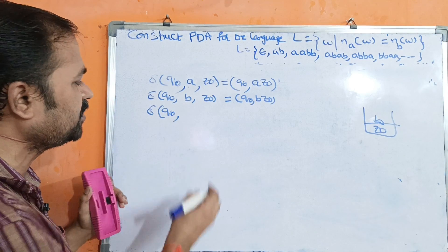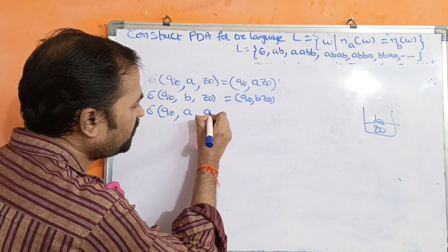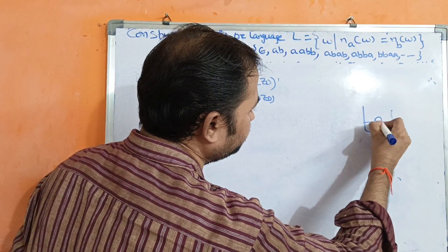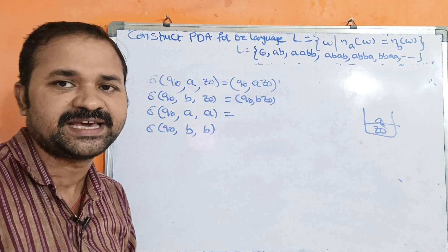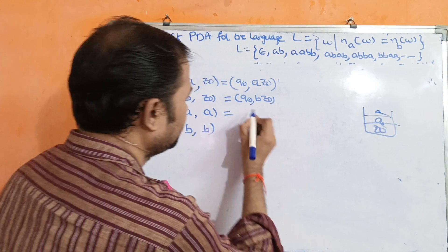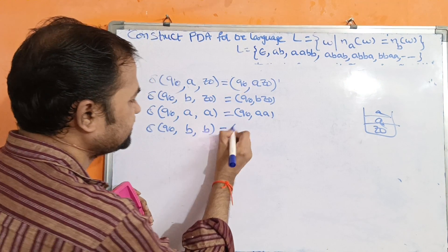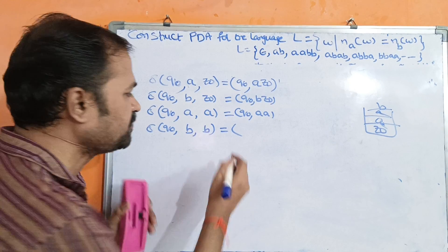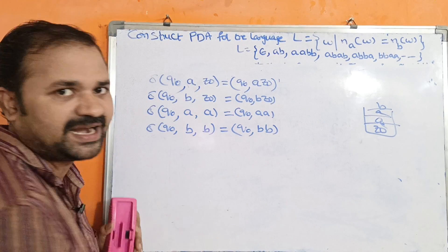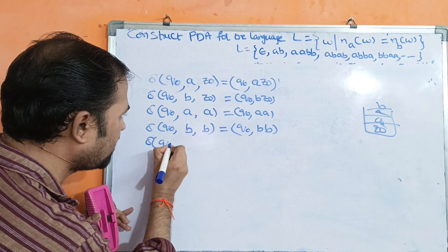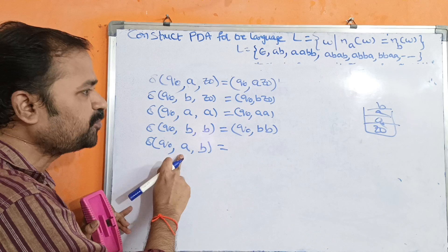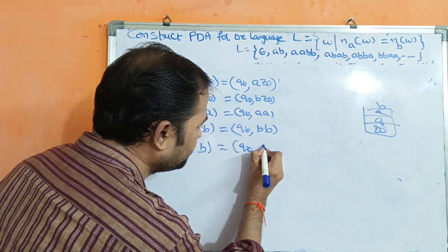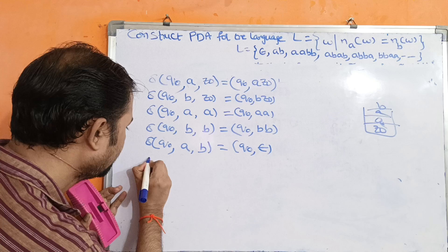Next, at state Q0, if the input symbol is A and the top of the stack is A, we push A: δ(Q0, A, A) = (Q0, A A). Likewise, if input is B and top of stack is B, we push B: δ(Q0, B, B) = (Q0, B B). For the pop cases: δ(Q0, A, B) — input is A but top of stack is B, different symbols, so pop: (Q0, ε). Epsilon here specifies we are performing the pop operation.